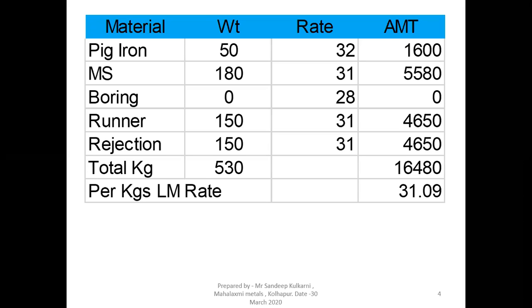In the first case, pig iron is 50 kg, MS is 180 kg, boring is 0 kg, runner riser is 150 kg, rejection is 150 kg — total 530 kg — and the cost comes to 31.09 rupees per kg. Note that boring use is zero, which has a rate of 28 rupees per kg, and runner riser and rejection together are 300 kg, costing almost 31 rupees per kg.